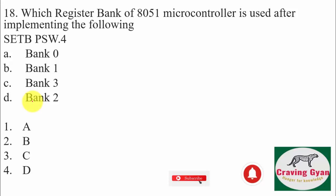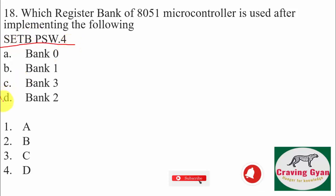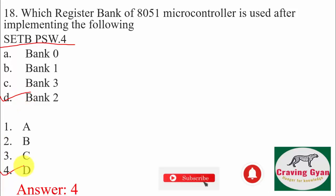Eighteenth question: which register of the 8051 microcontroller is used after implementing set bit PSW.4? We know we are going to make use of bank 2, hence option D is correct. PSW stands for Process Status Word.